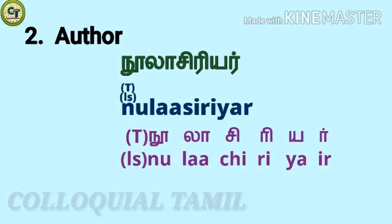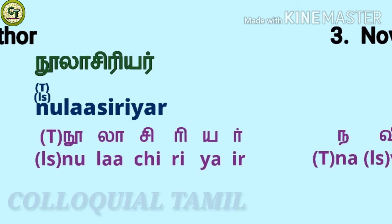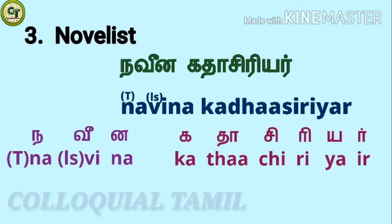For author, the Tamil term is nool asriya. Instead of the first letter in asriya, which is the long-sound letter a, you add these two letters in the front: noo, a long-sound letter, and la, a long-sound letter — together: nool. So: nool asriya. There are also other words for author in Tamil, like akkyon, karutan, etc. For novelist, the Tamil term begins with naadaga asriya.